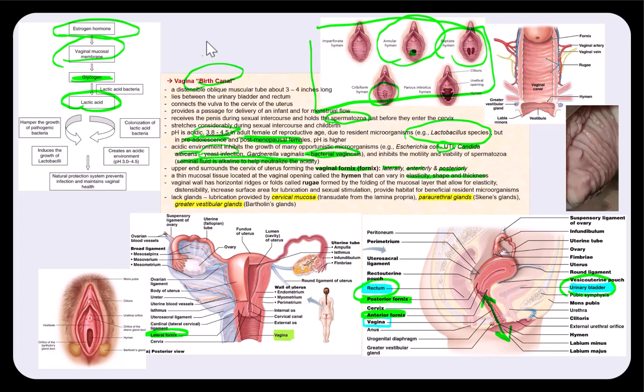After the first vaginal birth, the hymen is significantly stretched or torn. In rare instances, some females may have what's called an imperforate hymen, whereby there is no opening. So a minor surgery will have to be performed to create an opening allowing for menstrual flow.